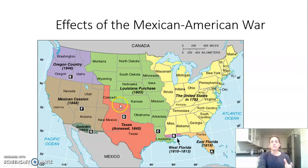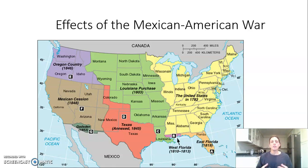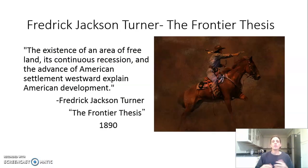The Mexican Cession extended sectional tension within the United States — every time new land was gained, it reopened the question of how to deal with slavery in that territory. California wanted to enter the Union quickly due to the Gold Rush and its rapidly growing population. Figures like David Wilmot proposed the Wilmot Proviso to ban slavery in the new territories, connecting to the abolition and free soil movements and further sectionally dividing the country.